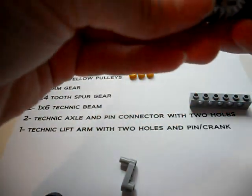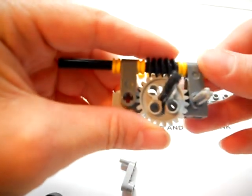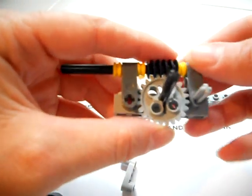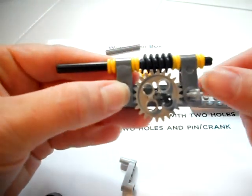so that it lines up. And now you can see that my worm gear meets up with my spur gear, okay?